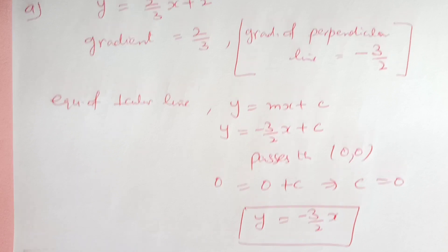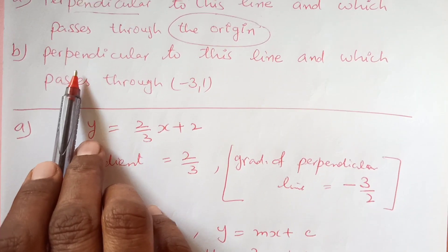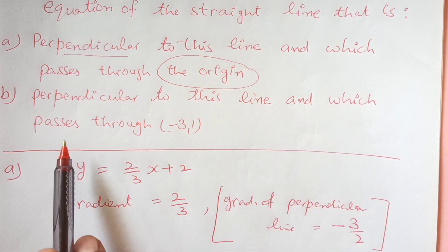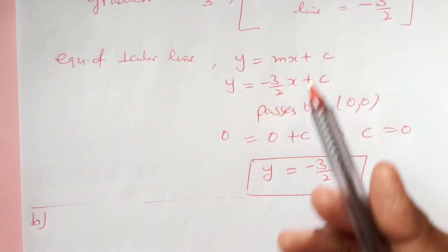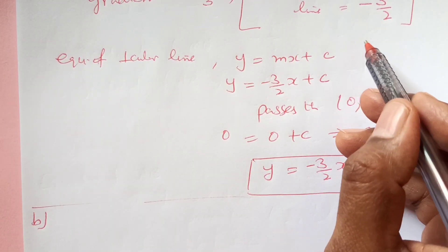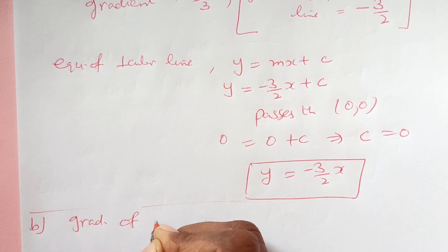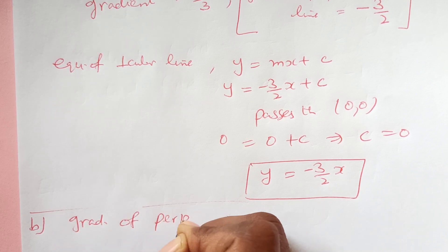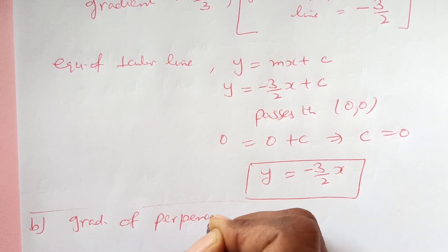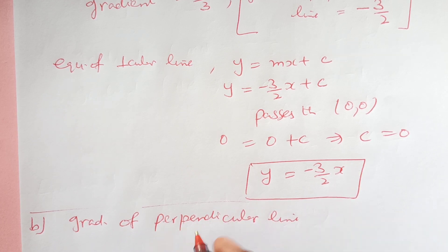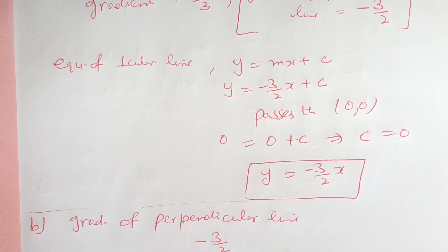That was part a. For part b, we are again looking for the equation of a line that is perpendicular to the given line. For the perpendicular line, we already know the gradient — the gradient of the perpendicular line is negative 3 over 2.